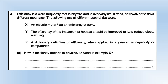Efficiency is a word frequently met in physics and in everyday life, but it often has different meanings. A motor has an efficiency of 82%; the efficiency of insulation in houses should be improved to help reduce global warming; and a dictionary definition of efficiency applied to a person is capability or competence. In physics, efficiency is defined as the useful energy divided by the total input energy, or the useful power divided by the total input power.